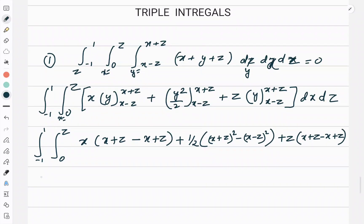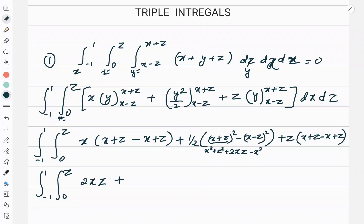Next step — from minus 1 to 1, 0 to z. If you observe, x and minus x get cancelled, giving 2z. In the second term, opening (a plus b) whole square gives x squared plus z squared plus 2xz, and (a minus b) whole square gives minus x squared minus z squared plus 2xz. So x squared and z squared cancel, giving 4xz. With the existing 2, it becomes 4xz. In the last term, x and minus x cancel giving plus 2z squared.